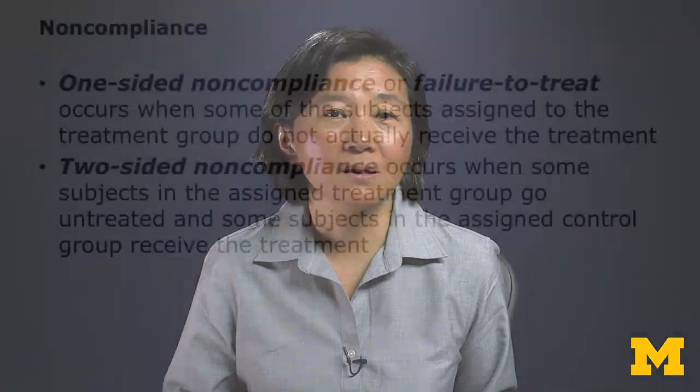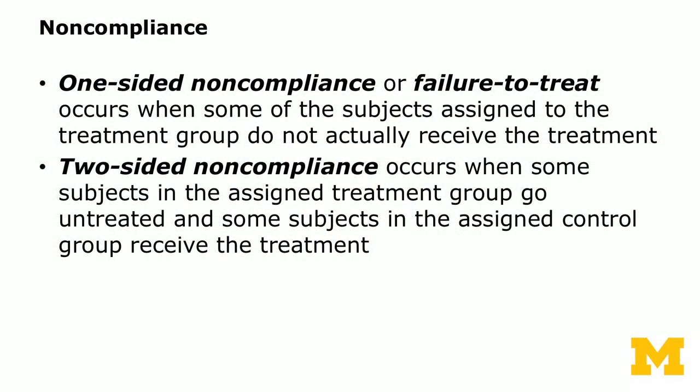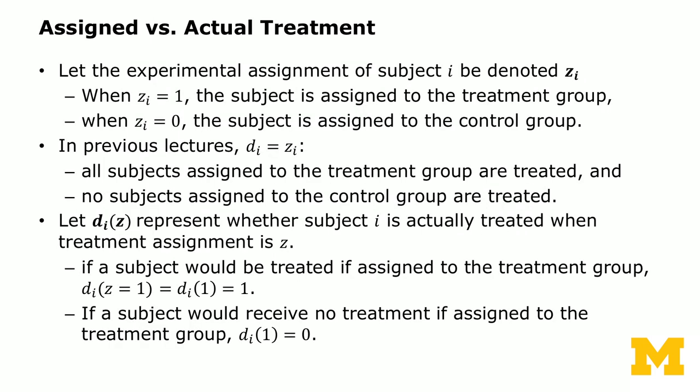They're not treated because they did not read what you intended them to read. The other type of noncompliance is called two-sided noncompliance. This occurs when some subjects in the assigned treatment group go untreated, and some subjects in the assigned control group actually receive the treatment. We'll go through examples of both.